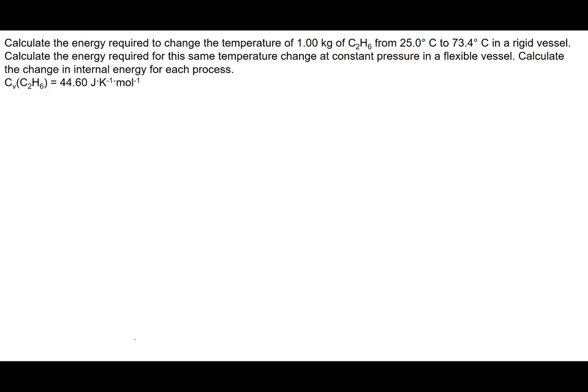A few big key points to look at: for the first part of the problem we're going to be calculating in a rigid vessel. A rigid vessel should tell us that we're going to be doing it at constant volume — this is going to be a constant volume problem. Another way to approach it is thinking about it as a bomb calorimetry problem. In a bomb calorimeter, you do a reaction or some type of process, and it's going to be at constant volume in that case.